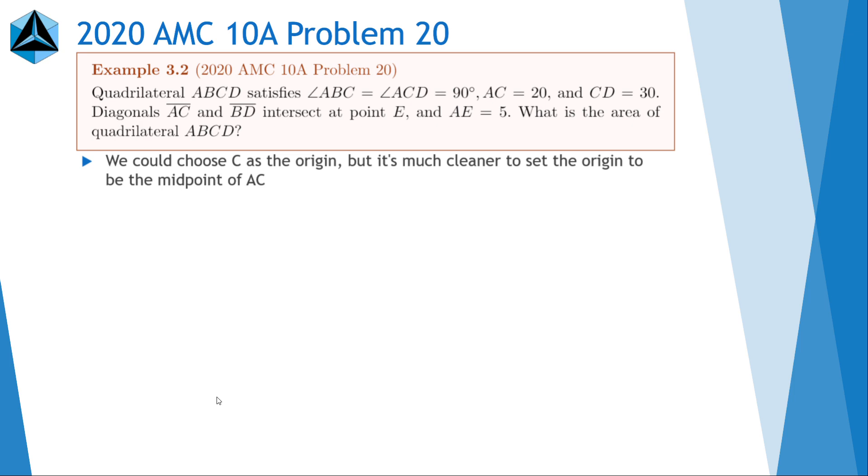the angle ABC equals 90 condition motivates us to set the origin as the midpoint of AC because that way you can draw a circle. You can draw a circle centered at the origin with radius of AC over 2 and B will lie on that circle. So what we can do is we have something like this, so B is over here. This is A, E, C, and D.